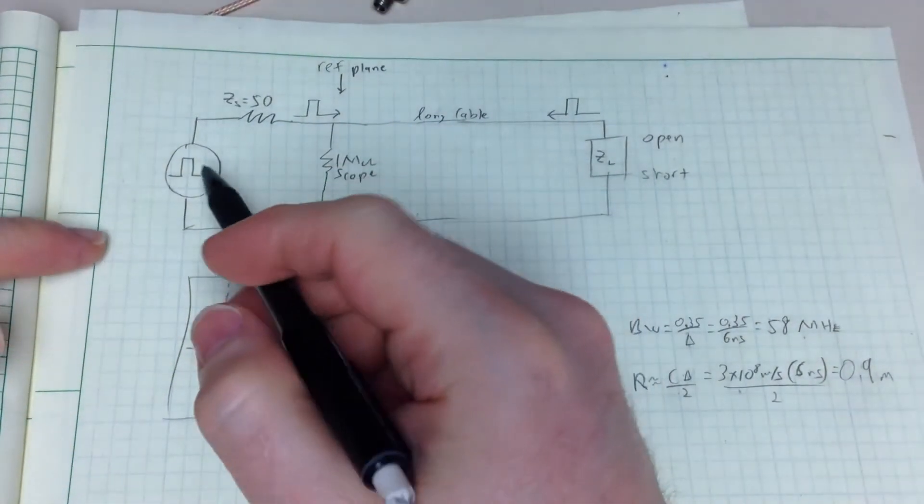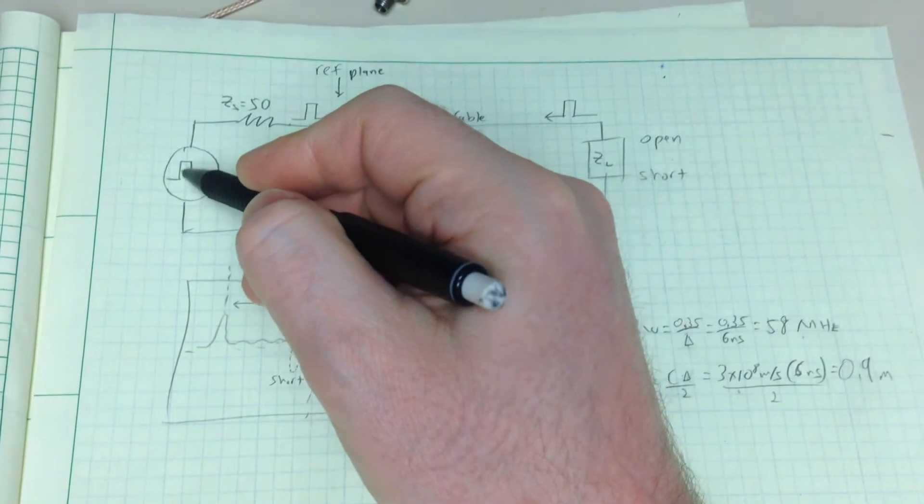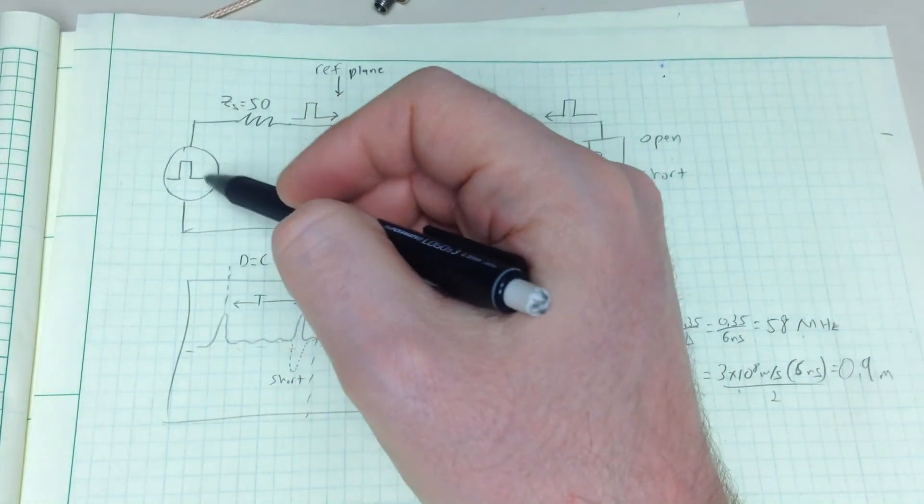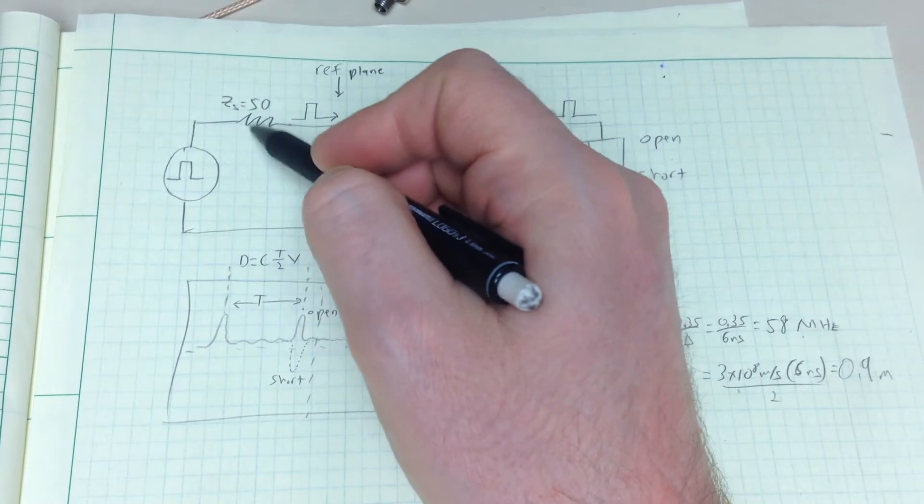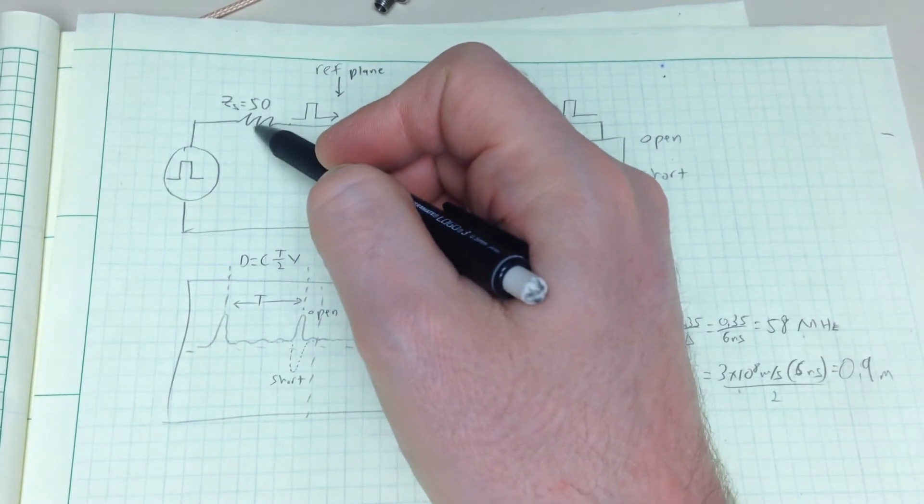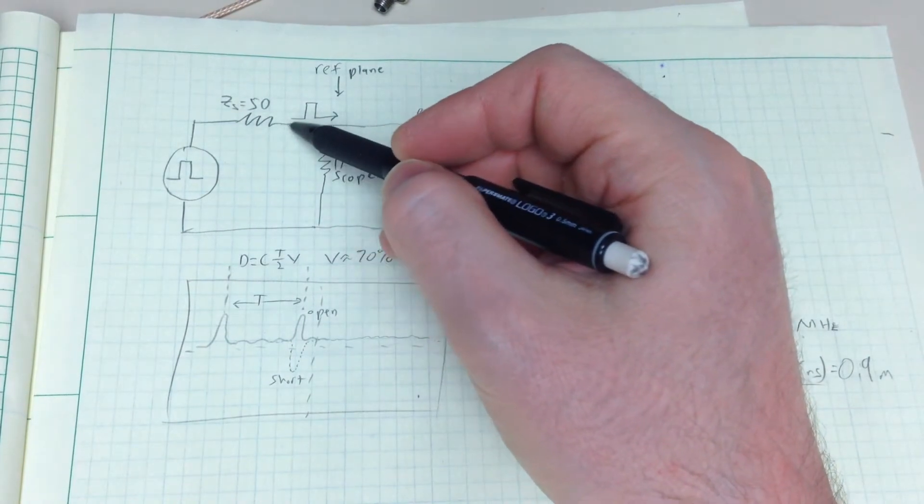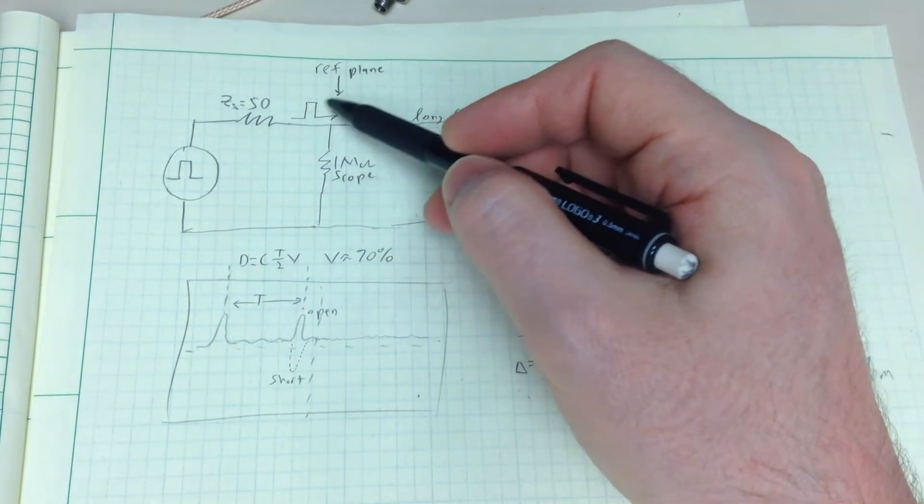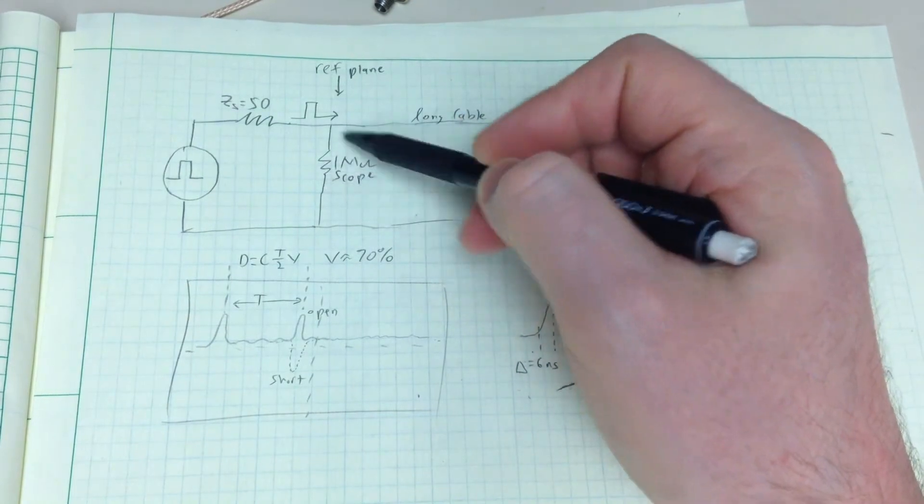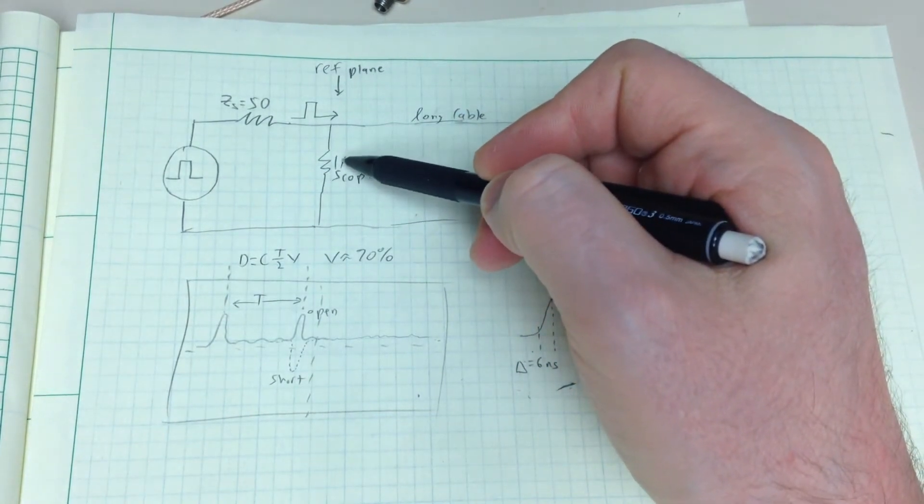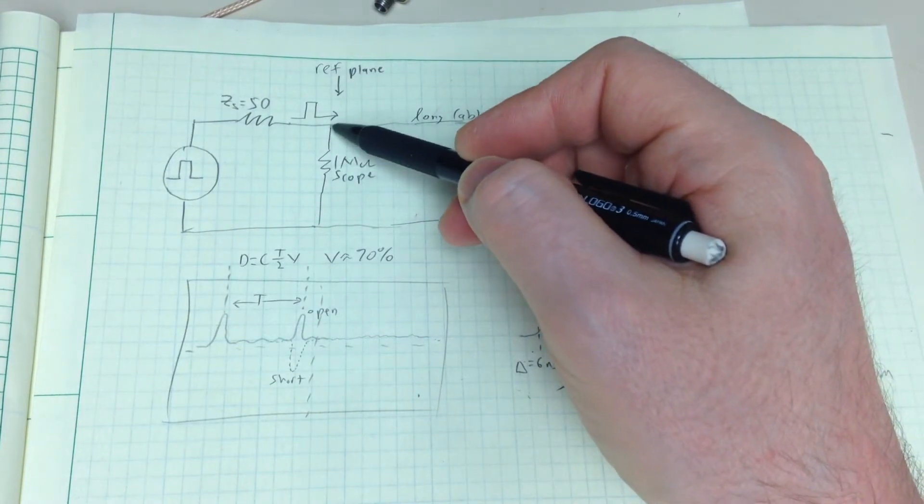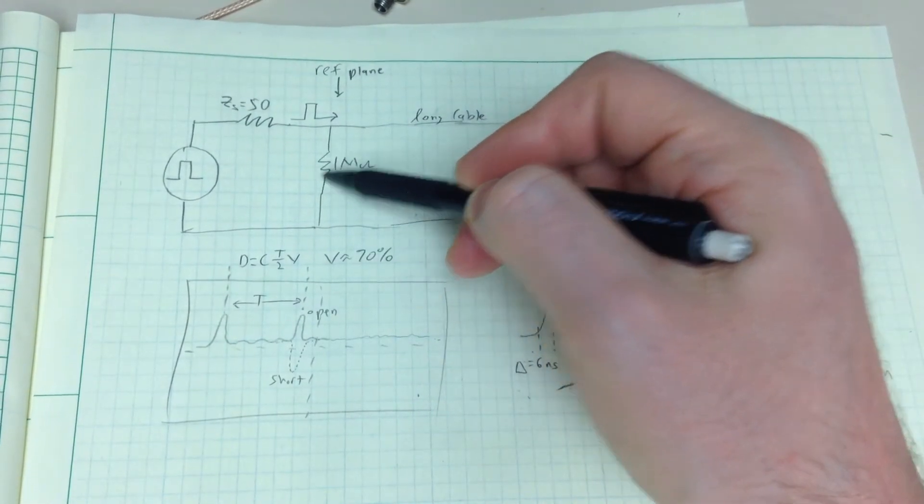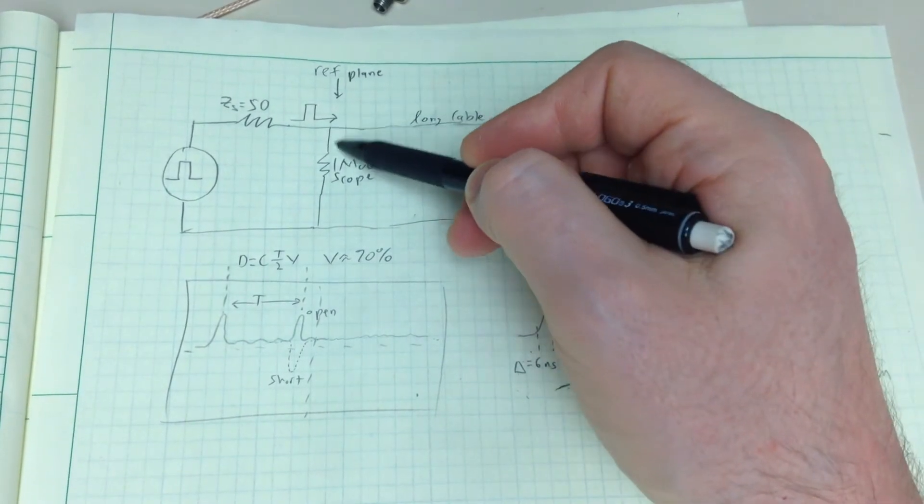The way TDR works is you start off with a pulse generator right here. What's important is the rise time of this pulse, not necessarily the width, but how fast it can go from a low to a high transition. So that pulse is going to go through a 50-ohm internal resistance right here, which is built into most decent RF generators. And this is important because it's going to absorb any reflections that are going to come back so they don't go back for another bounce.